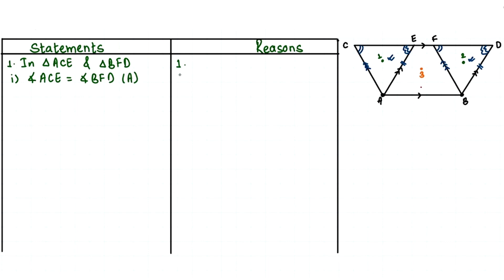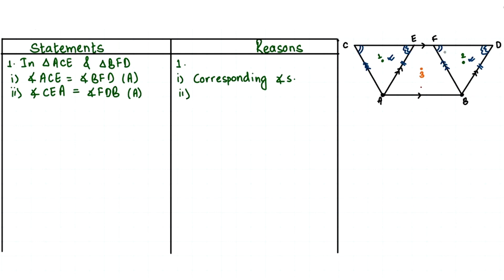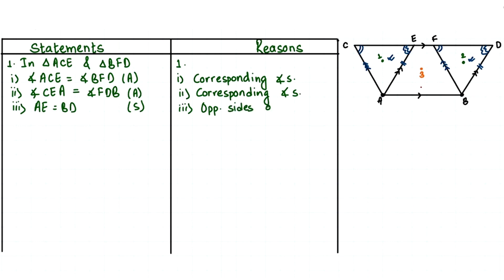The reason these angles are equal is that they are corresponding angles. Similarly, the next angle: angle CEA is equal to angle FDB. Again these are corresponding angles — so the reason is the same. The third statement is the side: AE is equal to BD. The reason these two sides are equal is that they are opposite sides of a parallelogram.